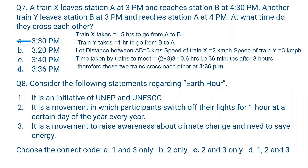Train X takes 1.5 hours from A to B, and train Y takes 1 hour from B to A. Let the distance between A and B be 3 km. Speed of train X = 2 km/h, speed of train Y = 3 km/h. Time taken for them to meet = distance divided by combined speed = 3 divided by (2+3) = 0.6 hours = 36 minutes after 3 pm. Therefore the two trains meet at 3:36 pm.